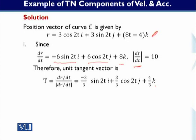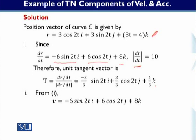Now for part two, we have to verify that the velocity vector V is exactly equal to the magnitude of velocity v times the unit tangent vector T. We can say that just as x equals its magnitude times its unit vector, similarly velocity equals the magnitude of velocity multiplied by the unit tangent vector.